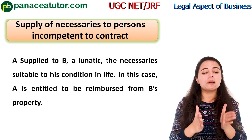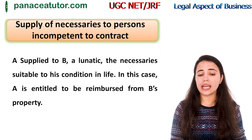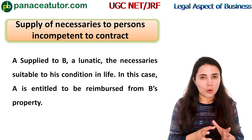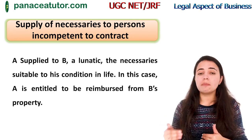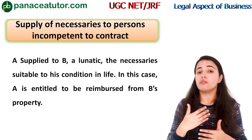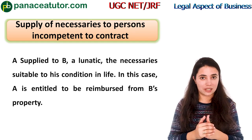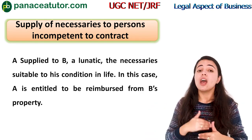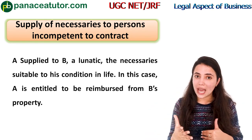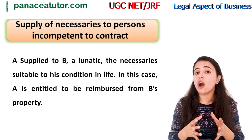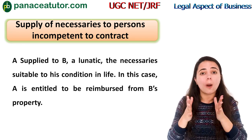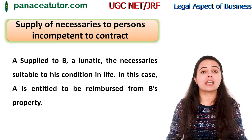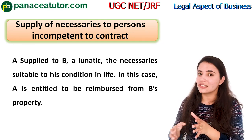The first kind of quasi-contract is supply of necessaries to persons who are incompetent to contract. If some person is incompetent to contract — for example, a person of unsound mind or a lunatic — and another person supplies all the necessaries to that lunatic person, then the law creates an obligation that the person who supplied the necessaries will get reimbursement from the property of the incompetent person.